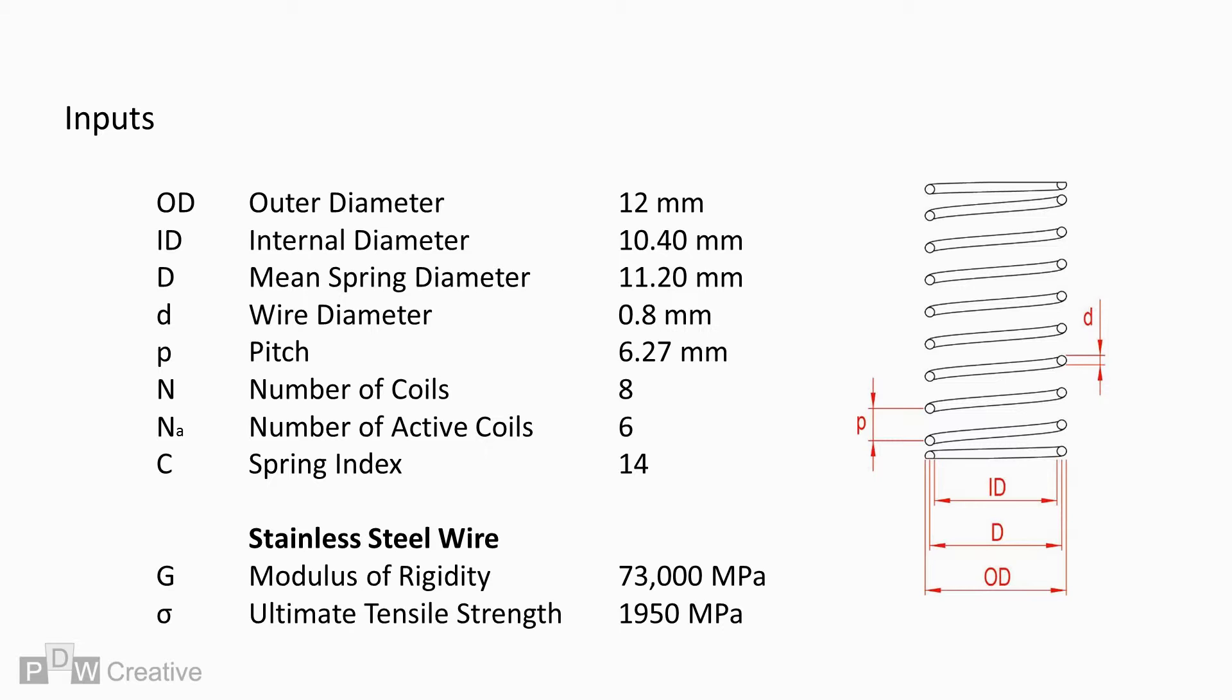Let's put together some inputs for calculating force, rate, and deflection. The OD and ID of the spring are relevant, but more so is the mean diameter. Wire diameter, pitch, coil count, and spring index are relevant and all contribute to force, rate, and deflection. We will go into these in more depth in future videos.